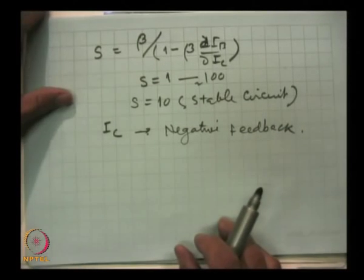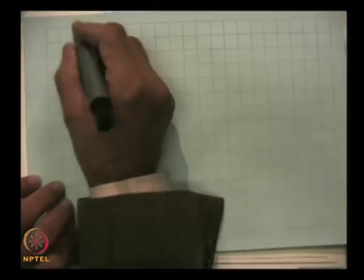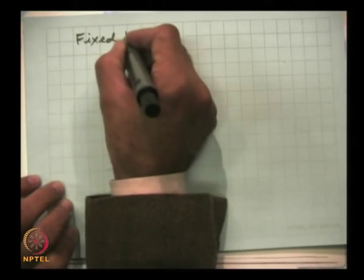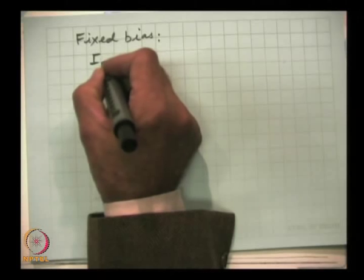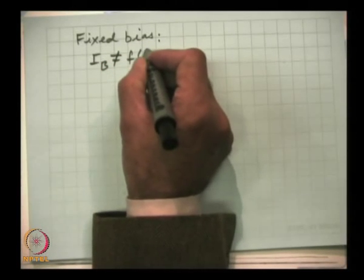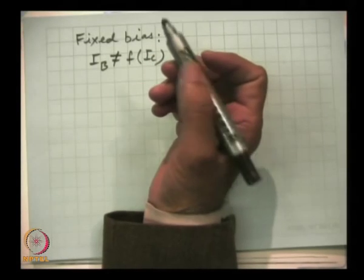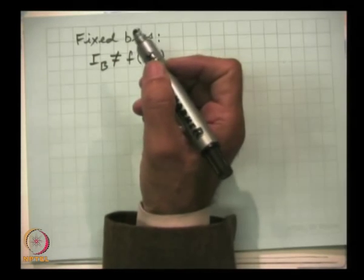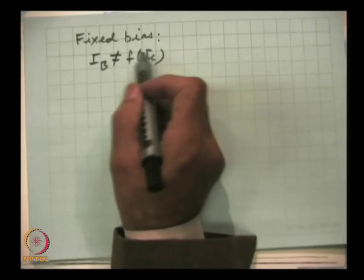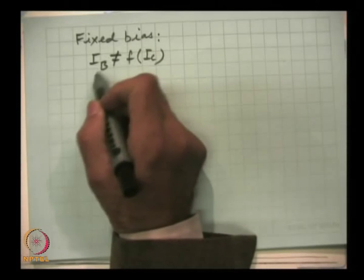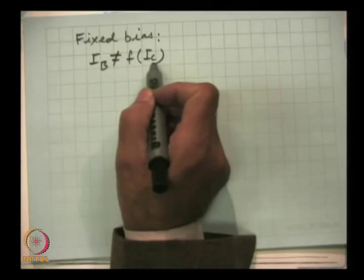First, let us consider fixed bias. In fixed bias, the base current I_B is not a function of the output current I_C. The reverse is always true, but the input current does not depend on the output current. This is because the collector is reverse biased and the emitter is forward biased.